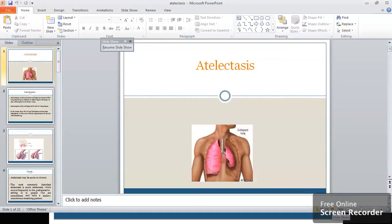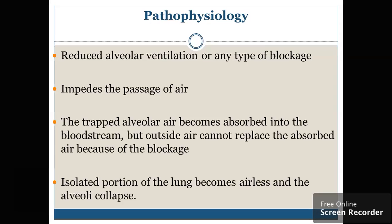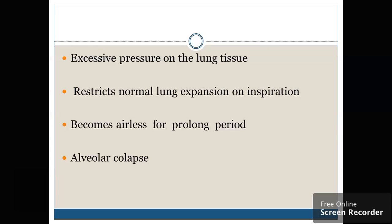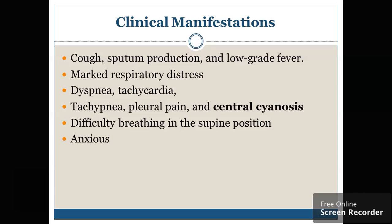If there is an isolated portion of the lungs, it becomes airless and the alveoli collapse. There will be excessive pressure on the lung tissue which will restrict normal lung inspiration or expansion, due to which the lung or alveoli becomes airless for a prolonged period and the alveoli collapse. Regarding clinical manifestations, if the patient is not able to breathe properly and the airway is blocked, what kind of respiratory symptoms will come when a person is suffering from atelectasis?